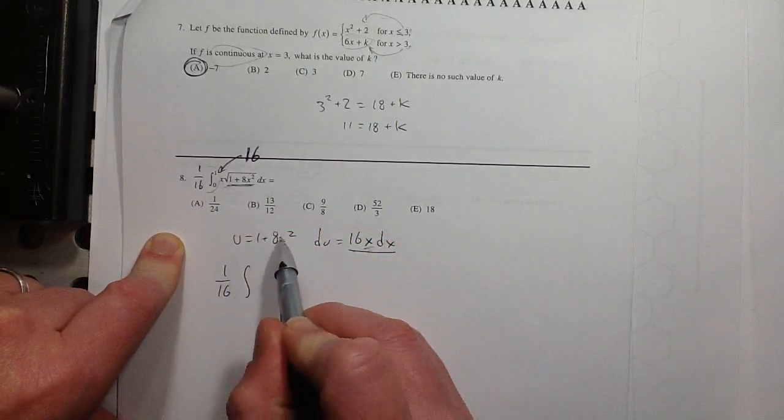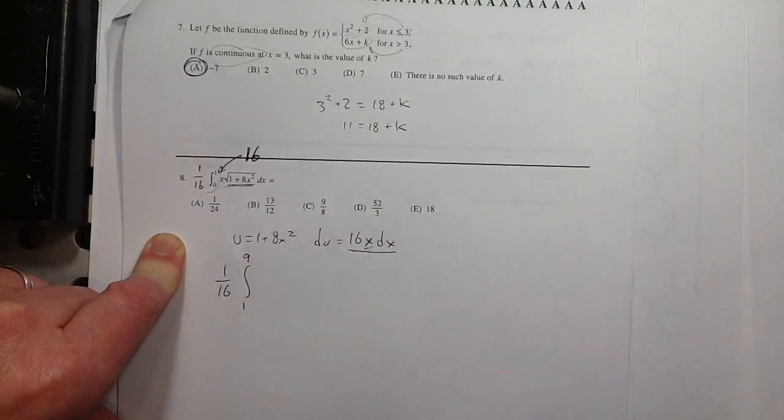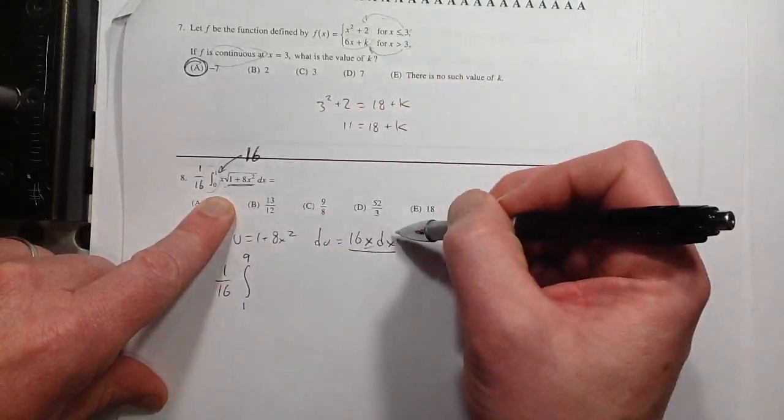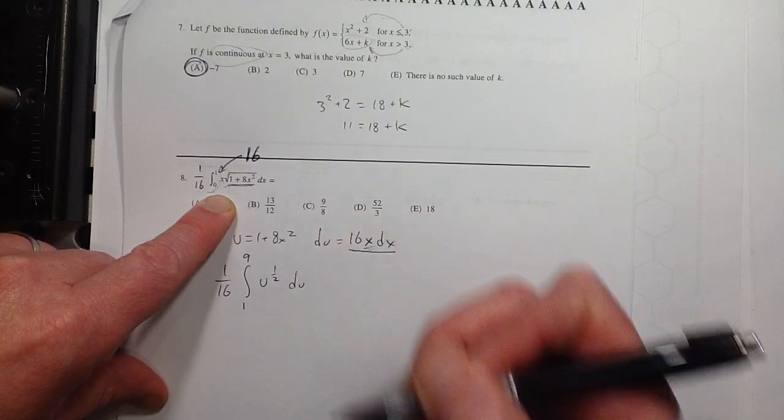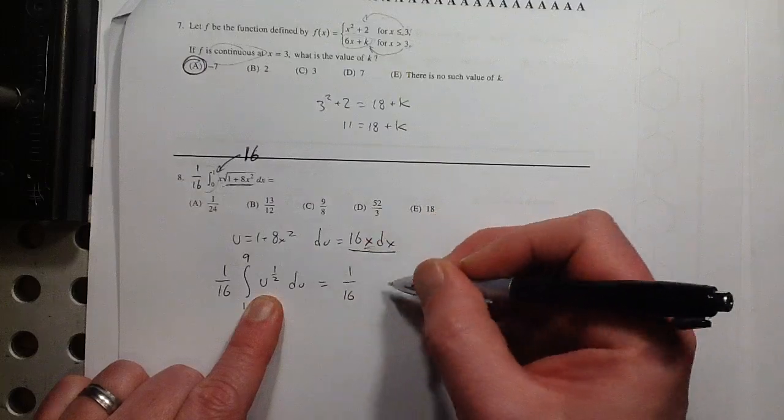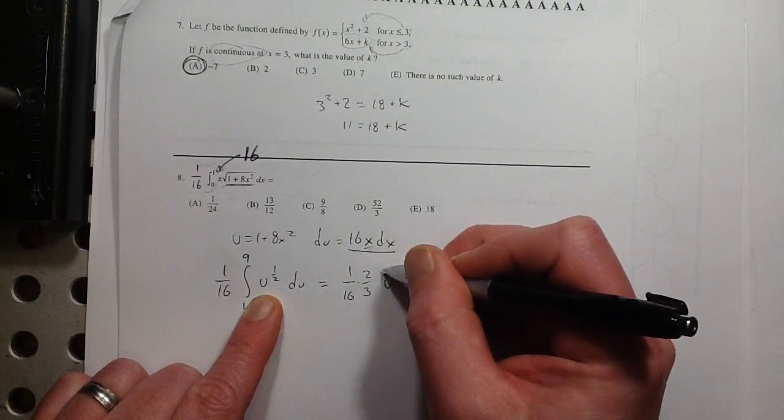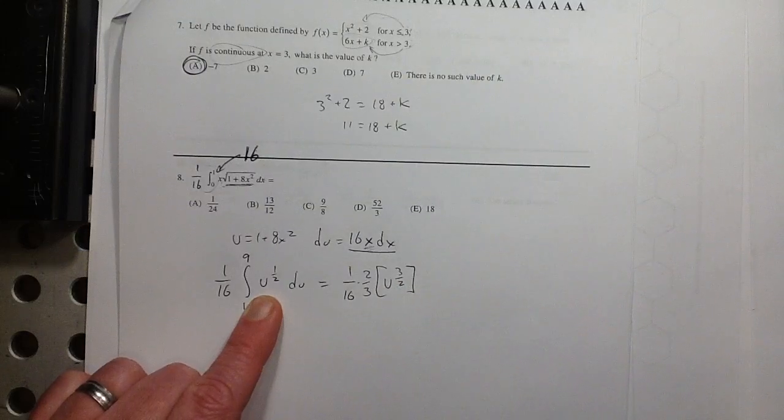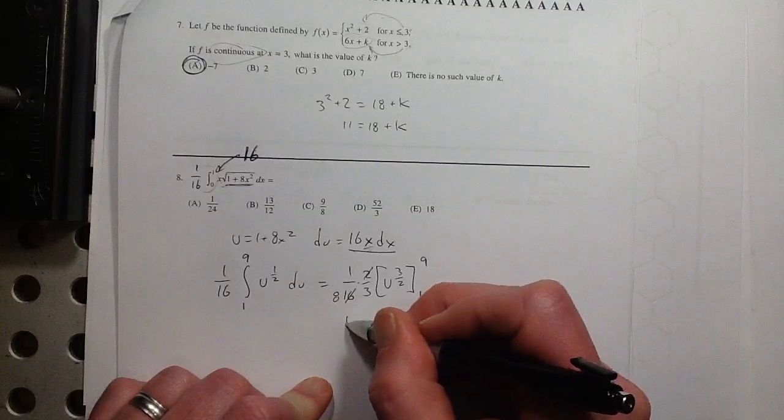So this integral turns into 1/16th times the integral. I need my new u numbers now. Plugging 0 into this, I get 1. And plugging 1 into this, I get 9. And then this whole thing, what does it turn into? So 16x dx, that all just turns into du. And then this turns into the square root of u, or u to the 1/2, better for calculus purposes. So what's the antiderivative of this? I bump the exponent up by 1, and I divide by the new exponent. So that's a 2/3rds. That 2/3rds here, that's a constant. I like to put it on the outside so I don't have to deal with it on the inside.